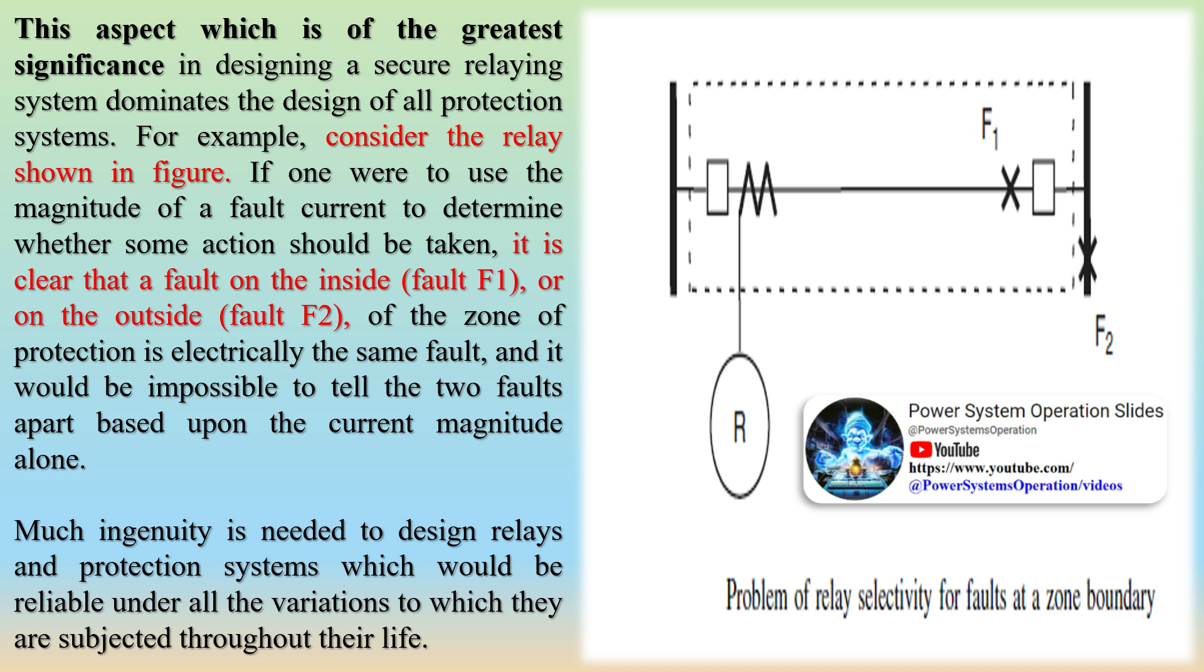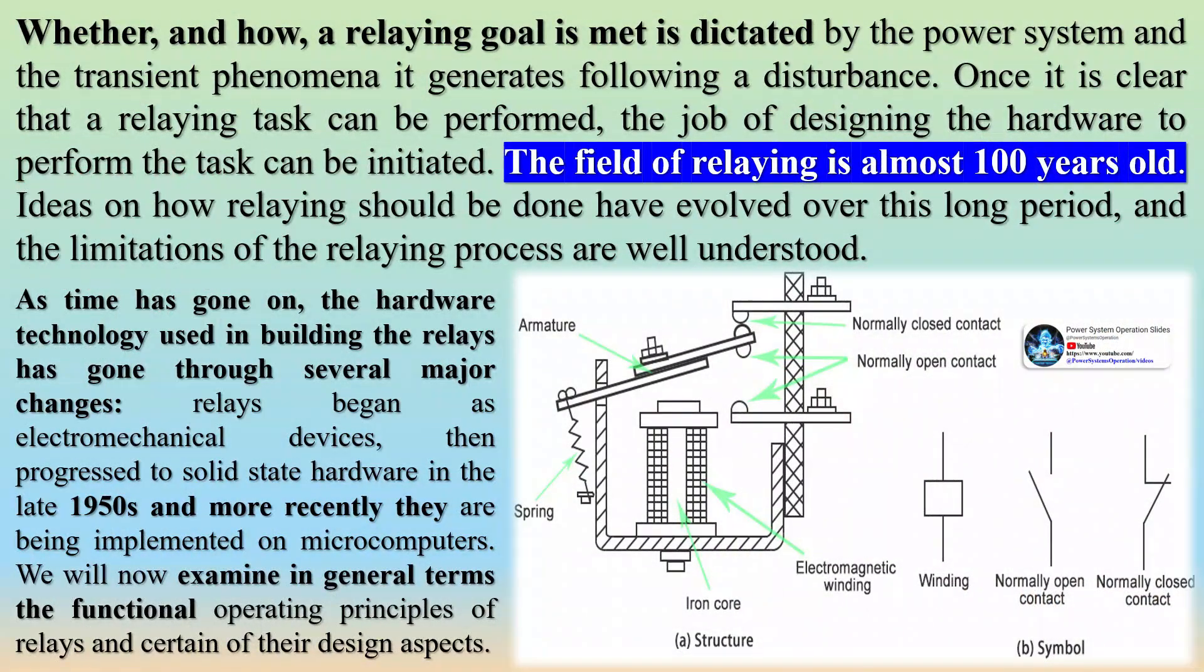Purpose of power system protection is to detect faults or abnormal operating conditions. Relays must be able to evaluate a wide variety of parameters to establish that corrective action is required. The most common parameters which reflect the presence of a fault are the voltages and currents at the terminals of the protected apparatus, or at the appropriate zone boundaries.